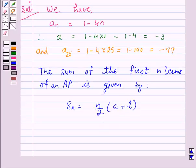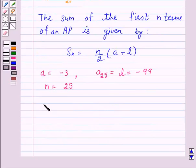Now here we have a equals minus 3, a25 which is the last term of the given AP is equal to minus 99, and n equals 25. So on substituting these values, we have S25 equals 25 over 2 into a which is minus 3 plus l which is minus 99.